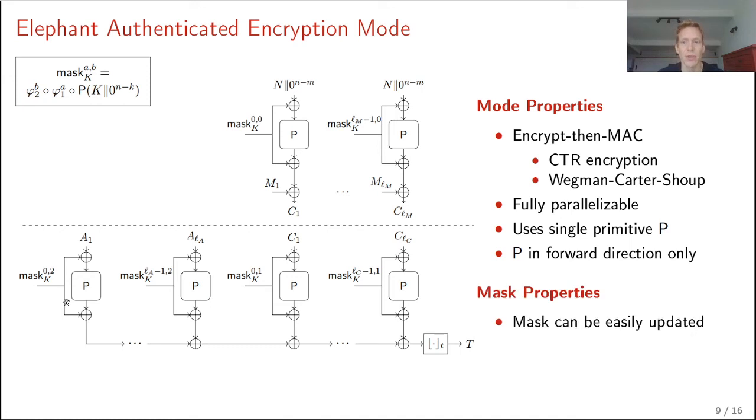The masking is chosen in such a way that it can be efficiently updated. To see this, suppose we compute a mask. For instance, mask 0, 0. Or in this case, mask i minus 1, 0. Then the next mask, mask i, 0, can be computed as simple as follows. Just evaluate phi 1 on the mask. There is another feature in the mask. Namely that if you would encrypt this vertically. So block-wise. So you encrypt to get keystream C1. And then you authenticate C1 on the fly. Then these two masks. So mask i minus 1, 0. Mask i minus 1, 1. Add up to mask i, 0. And this might be useful as well.